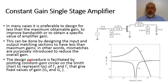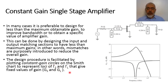The design procedure in this case is facilitated by plotting what we call constant gain circles. We are going to introduce constant gain circles for both the input and output sections, or for the input and load sections, which will introduce constant gamma_source and constant gamma_load. These constant gamma_source and gamma_load circles represent constant values for G_S and G_L, which are the gains of the input and output matching networks respectively.